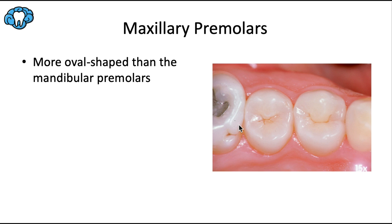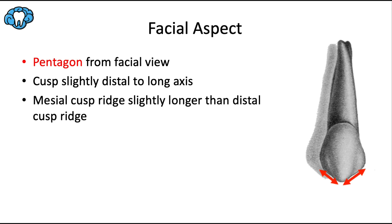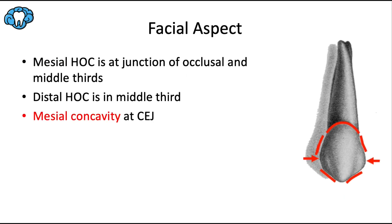Since we're talking about posterior teeth, there's a lot more going on with the occlusal surfaces, so I'll spend less time on the facial and side views and more on the occlusal. Like the canine next to it, this tooth has a pentagon shape from the facial view. The cusp tip is a little distal to the long axis because the mesial cusp ridge is slightly longer than the distal cusp ridge — opposite of the maxillary canine.